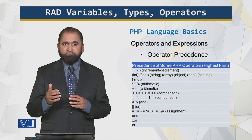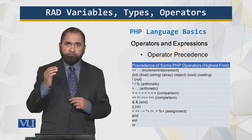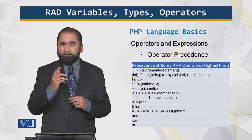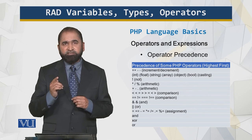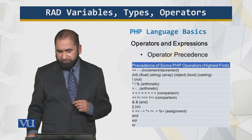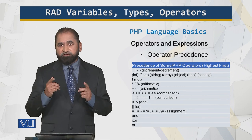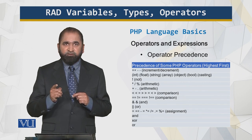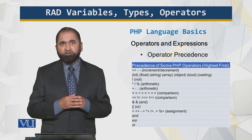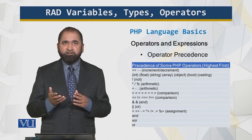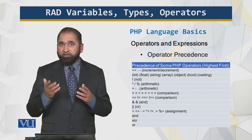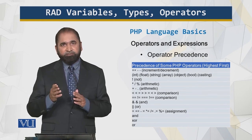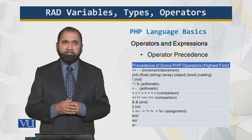This is the list of different operators listed in terms of their precedence — meaning which operator will execute at which priority. For example, if I have 2 plus 3 into 5, does it mean 2 plus 3 equals 5, times 5 equals 25? Or does it mean 3 times 5 equals 15, plus 2 equals 17? From this table we can see the precedence of multiplication is higher than addition, so the correct answer is 17, with multiplication taking place first followed by addition.